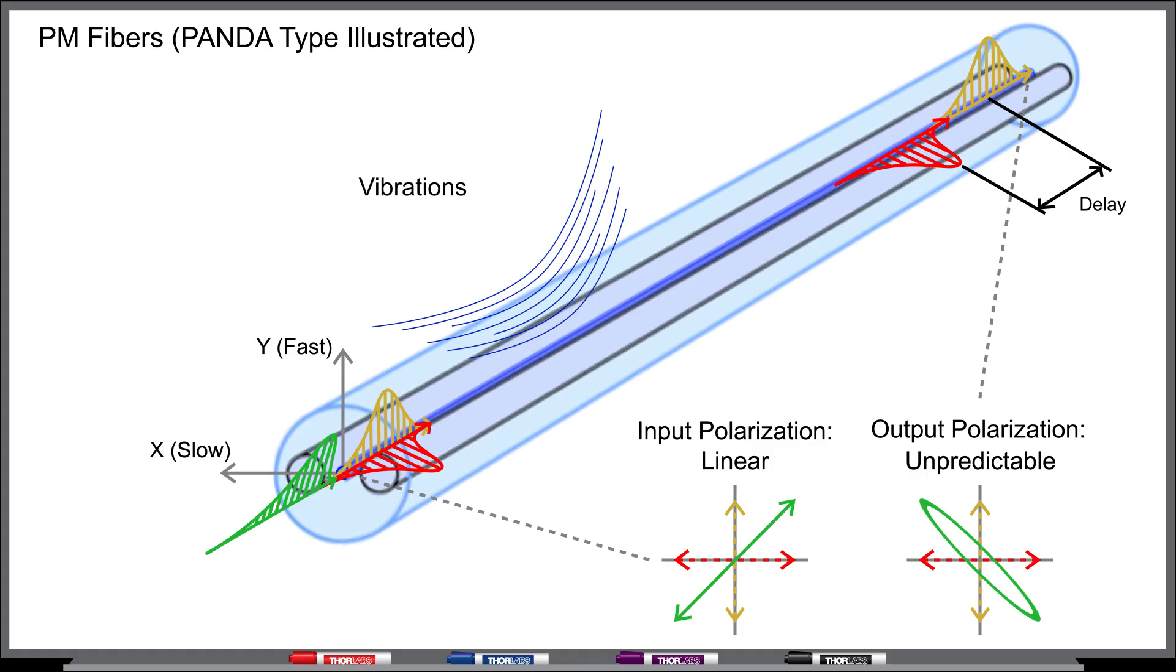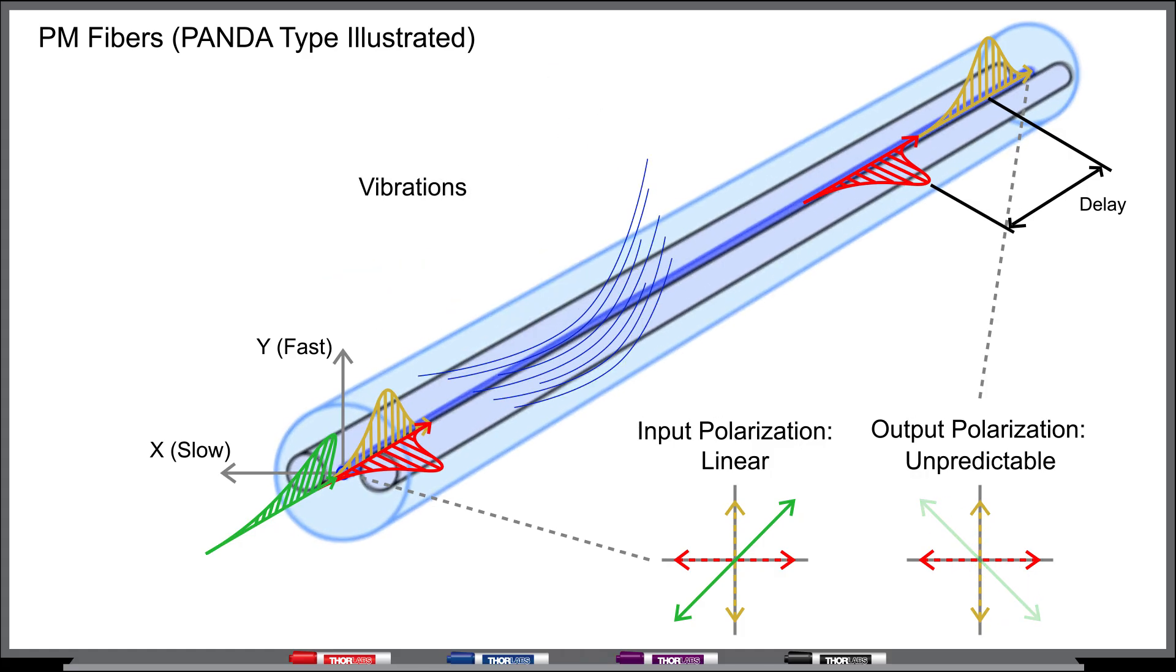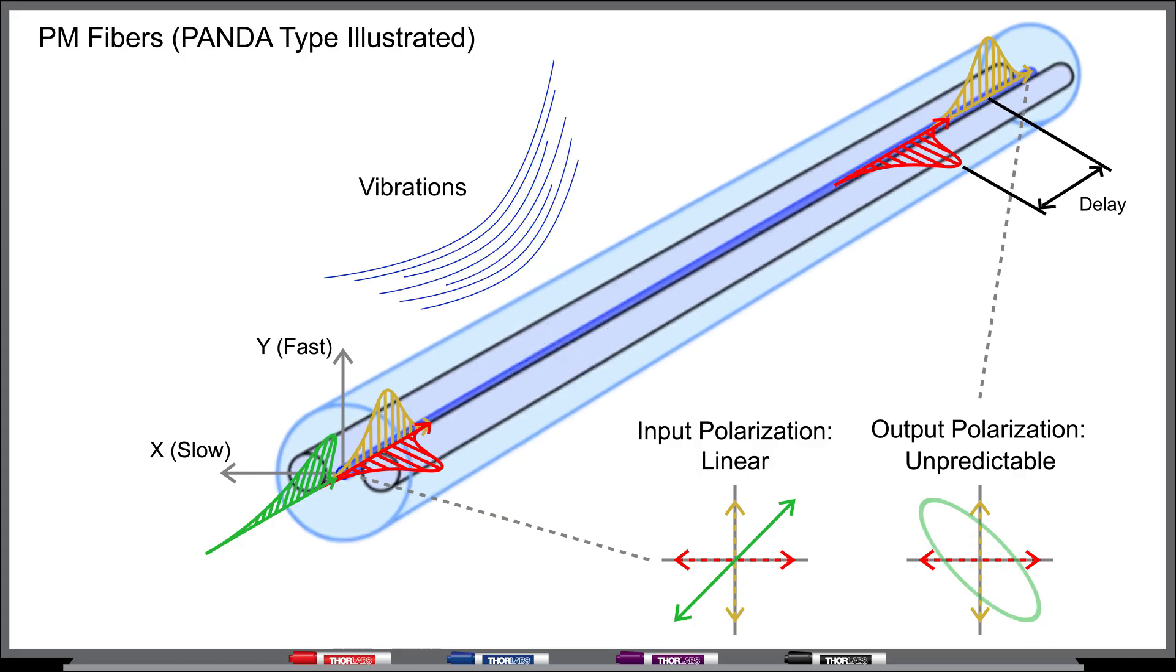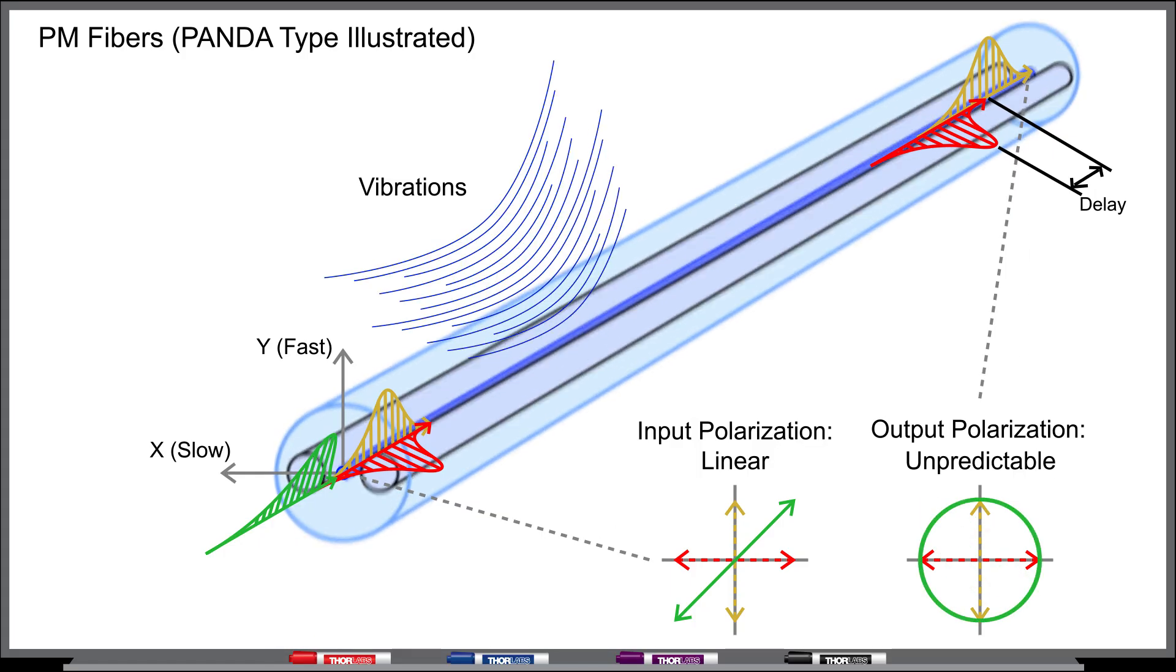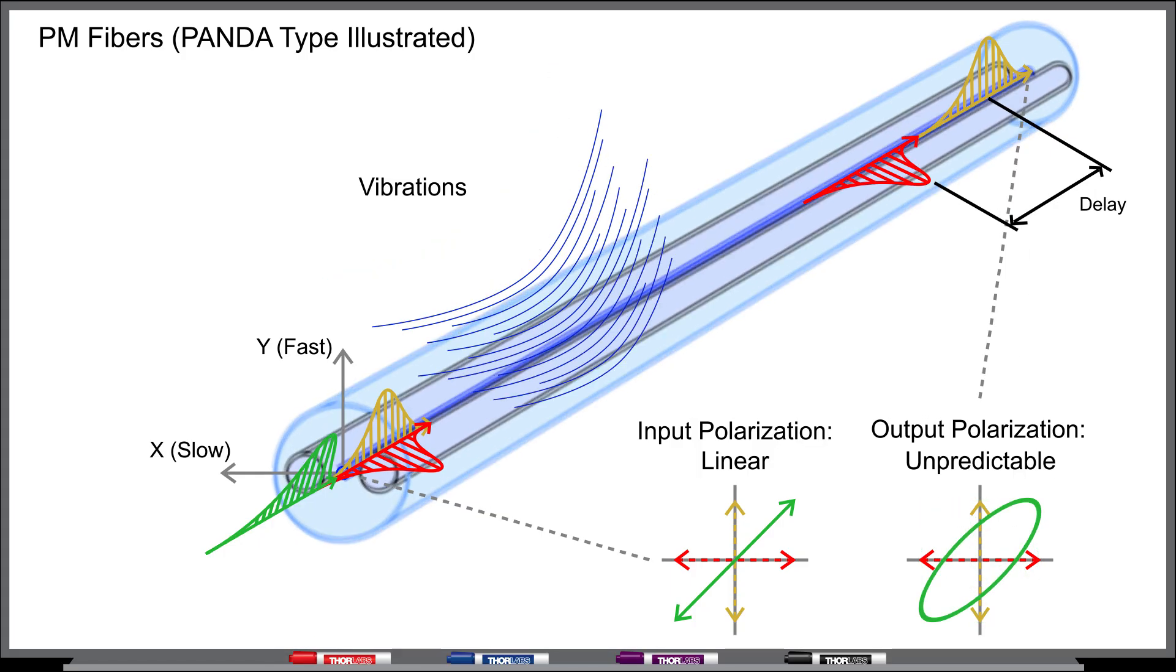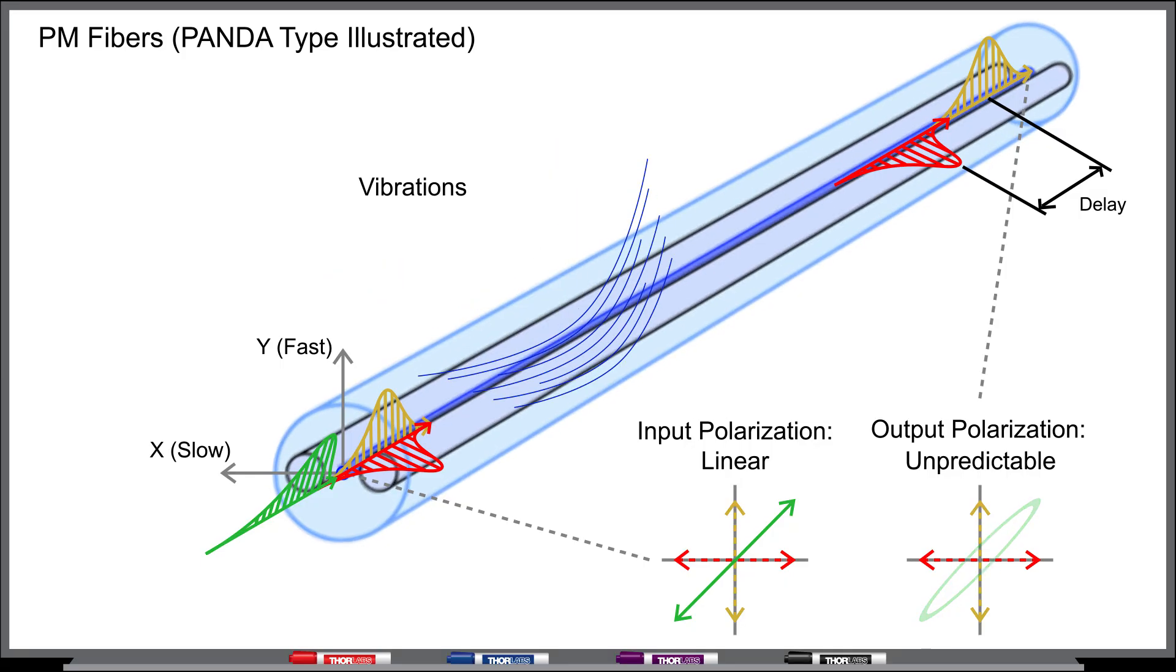Any perturbation to the fiber caused by mechanical vibration or temperature fluctuations will cause the phase delay between the two components to change, creating instability in the output polarization state.